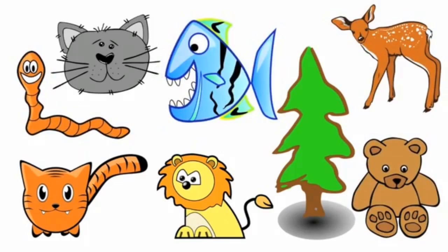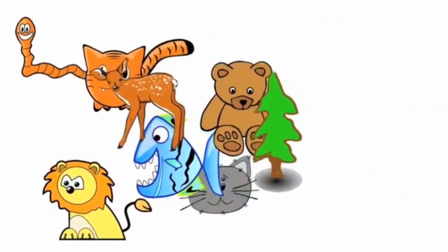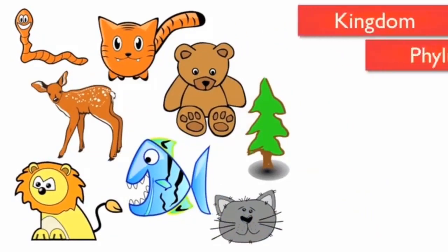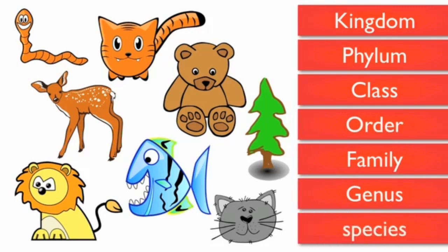There are some organisms in here such as worm, cat, fish, deer, tree, lion, and tiger. Let's try to find the scientific name of lion by using taxonomy system.